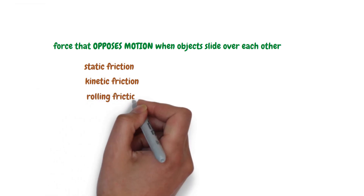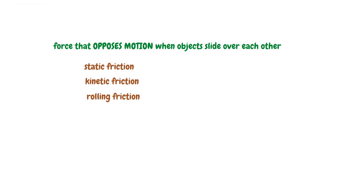Rolling friction is the force that resists the rolling motion of a body over a surface. Fluid friction is the force that resists the motion of an object through a fluid. The friction force has advantages and disadvantages. Applications of friction include braking systems, walking and driving, and manufacturing.